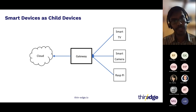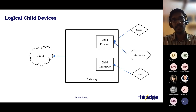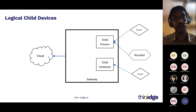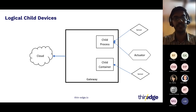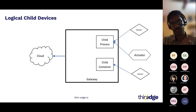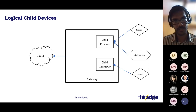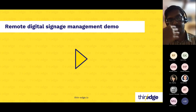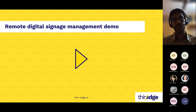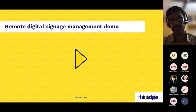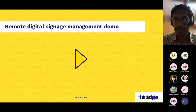The final type is logical child devices — processes or containers running on the same gateway device itself, appearing as child devices in the cloud. They may or may not be connected to further sensors and actuators, but are just logical processes running on the gateway. These are the common use cases or deployments we have seen.